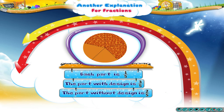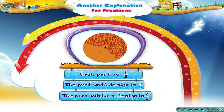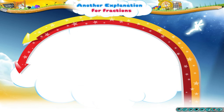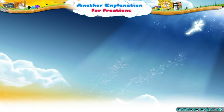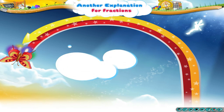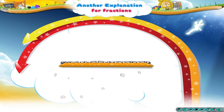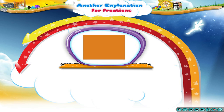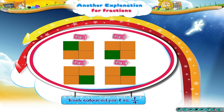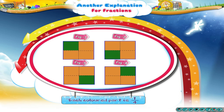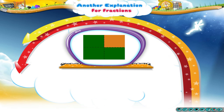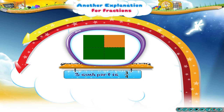Now observe this. One whole is divided into 4 parts. Each coloured part is 1 upon 4. Three such parts equal 3 upon 4.